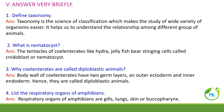Answer very briefly. Define taxonomy. Taxonomy is the science of classification, which makes the study of a wide variety of organisms easier and helps us understand the relationship between different groups of animals.